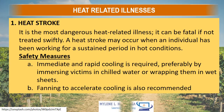Heat-related illnesses in farm operations. First is heat stroke — the most dangerous heat-related illness. It can be fatal if not treated swiftly. A heat stroke may occur when an individual has been working for a sustained period in hot conditions. Safety measures: immediate and rapid cooling is required, preferably by immersing victims in chilled water or wrapping them in wet sheets. Fanning to accelerate cooling is also recommended.